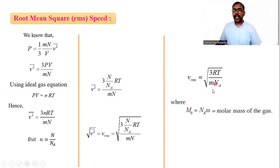In this formula, m into NA—m is the mass of a single gas molecule and NA is the Avogadro number—equals the molar mass of the gas. Let me substitute m0 for that. So we get v-RMS equals square root of 3RT divided by m0.